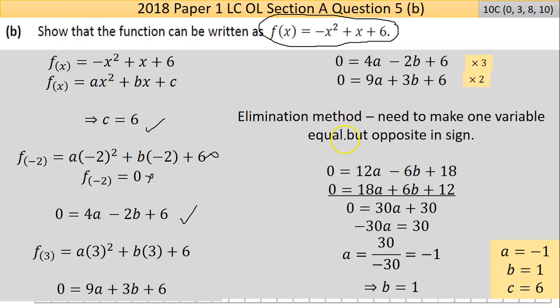So for this method to work, the elimination, I need to make one of the variables equal in size, but opposite in magnitude. The one that I went with is the b one. If I multiply the top equation, the first equation by three, I'll end up with minus six b. If I multiply the second equation by plus two, I'll end up with plus six b. Now, because I'm multiplying by three, I have to do it all the way across. So three times four a is 12a. Three times minus two b is minus six b. Then three by six is 18. On the second equation, two times nine is 18a. Two times the three b is six b. And lastly, two times six is 12.